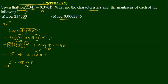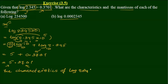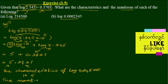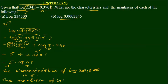So we have 2.3701 and 5.3701. We need to read the characteristic. The characteristic of log 234500 is 5, and the mantissa of log 234500 is 0.3701.